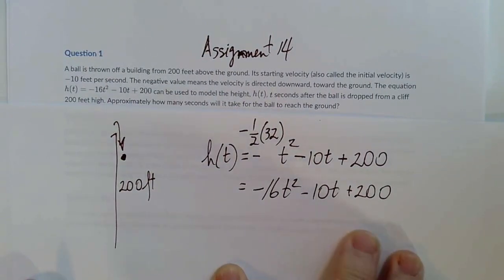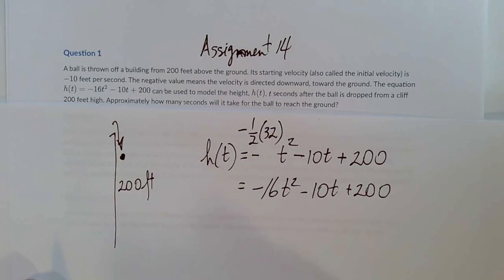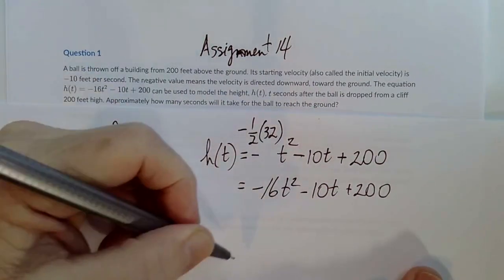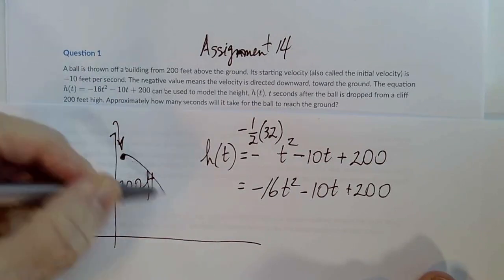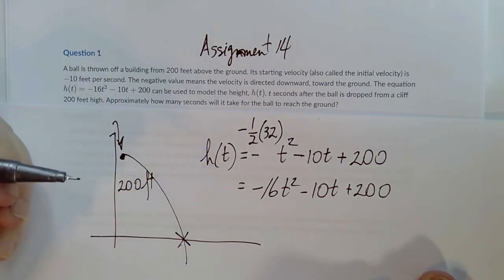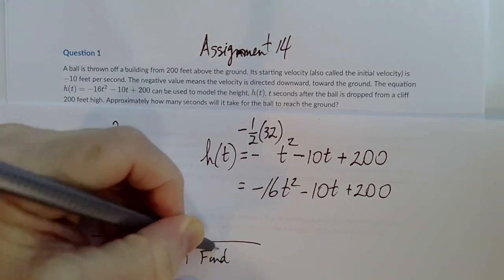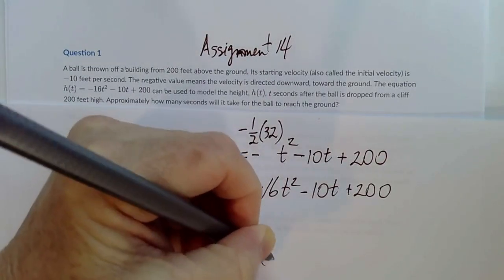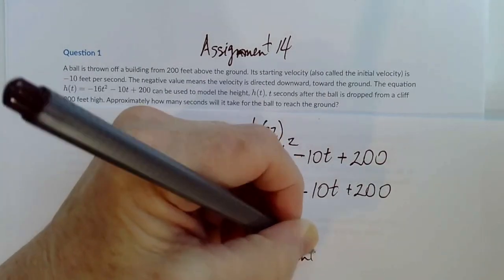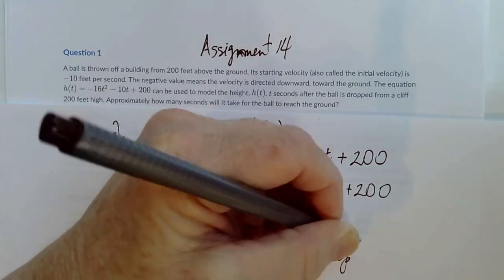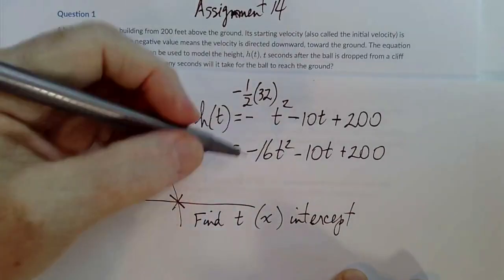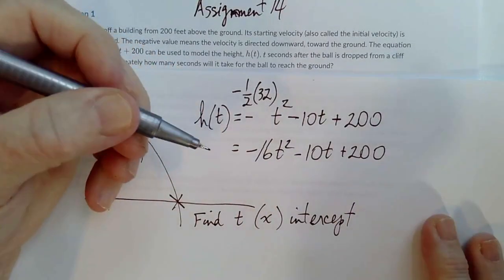And they want to know how long it takes for this ball to strike the ground. Well, it's going to strike the ground at an intercept. So I want to find a t, which is the same as an x-intercept. Well, that means I'm going to set this equal to 0 and solve for t.